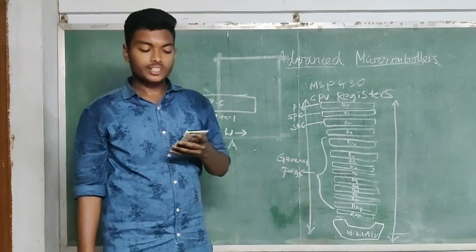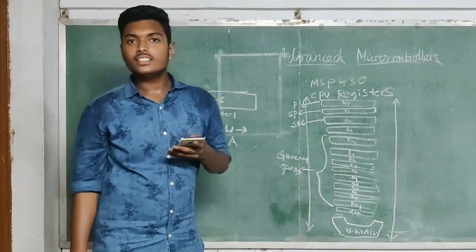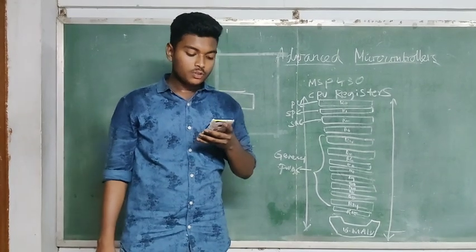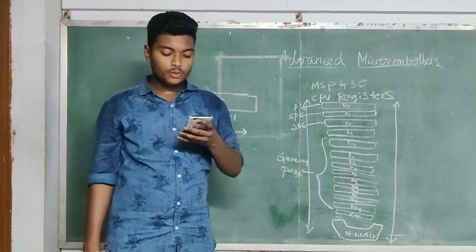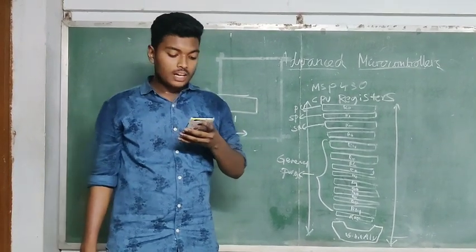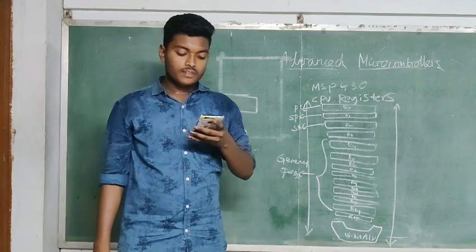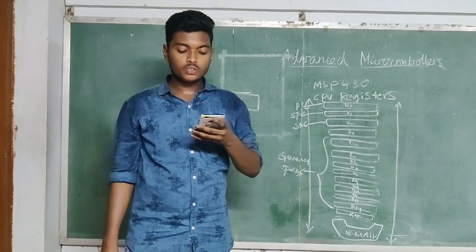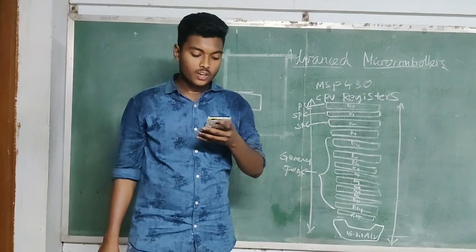Similarly, register R2 is assigned for status register. Status register is used as the main source or destination register. And it can only be used in register mode addressed with all instructions.